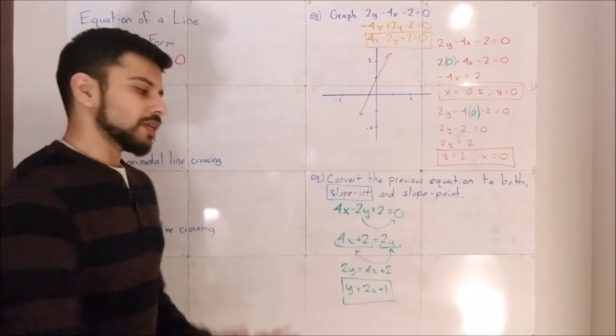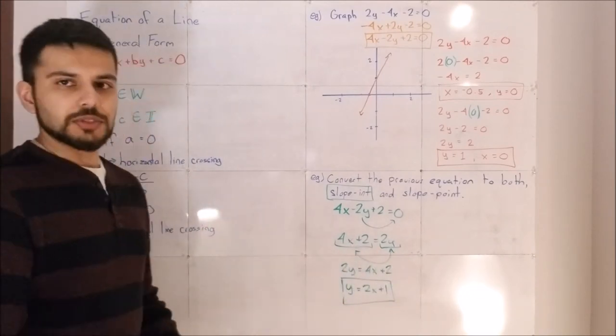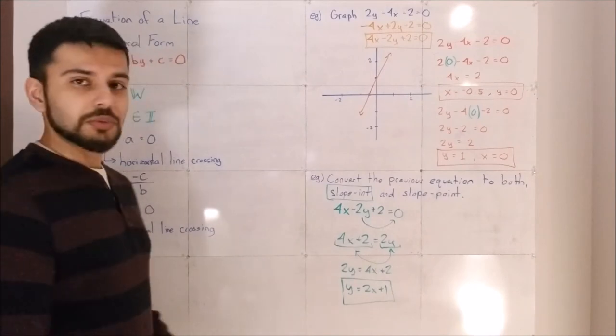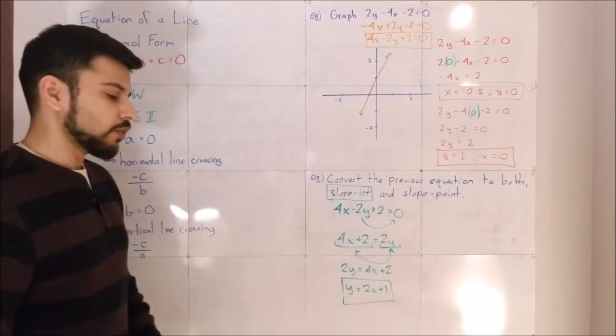To make it look like y equals mx plus b, I just swap the positions. You don't have to if you don't want to, but it helps to visualize for some people like myself. Then I end up with 2y equals 4x plus 2.